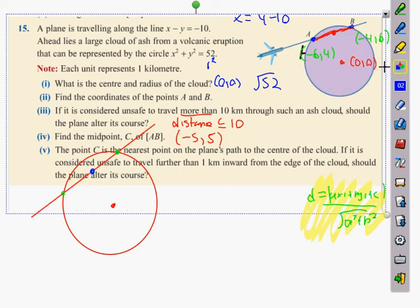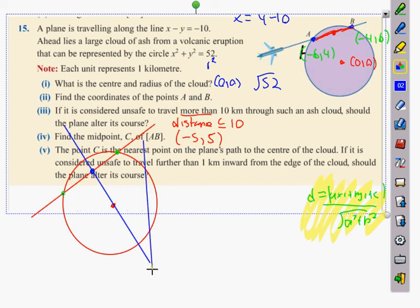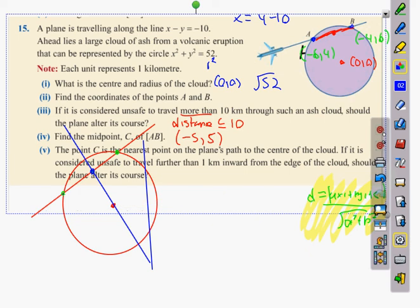Another key property: if you draw a perpendicular bisector through the midpoint of a chord, it always passes through the center of the circle. That has to happen every time — the midpoint of the chord and the center of the circle are always connected by the perpendicular bisector.